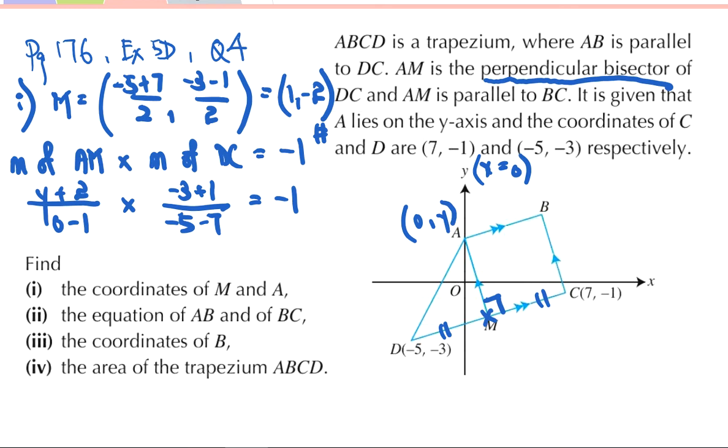So using the fact that the product of the two gradients will give us negative 1, and writing down the formula and simplifying, I will get the value of y to be equal to 4. So the coordinates of A in this case will be (0, 4).